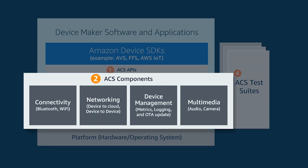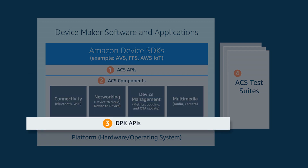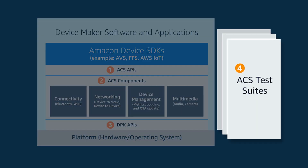These are common interfaces used by apps and higher level SDKs. Below that layer, we have pre-validated and memory optimized components for common functions such as connectivity. These are components that are necessary to enable the Amazon device SDKs. Next, we have the device porting kit or DPK APIs. These provide the necessary abstractions from underlying hardware and the operating system. This is what really enables portability across devices. Finally, we have the ACS test suites.